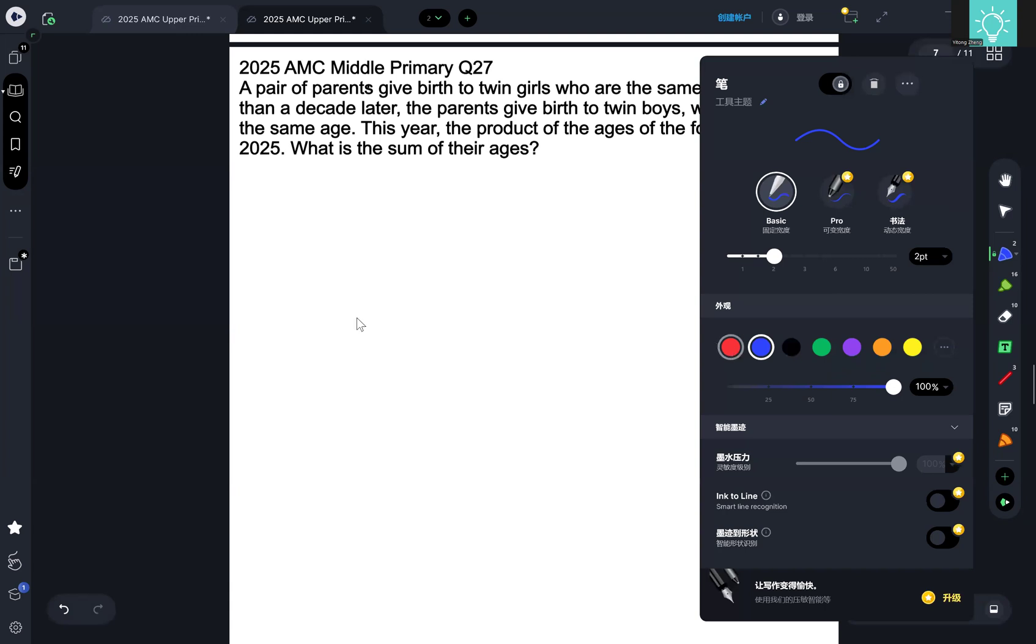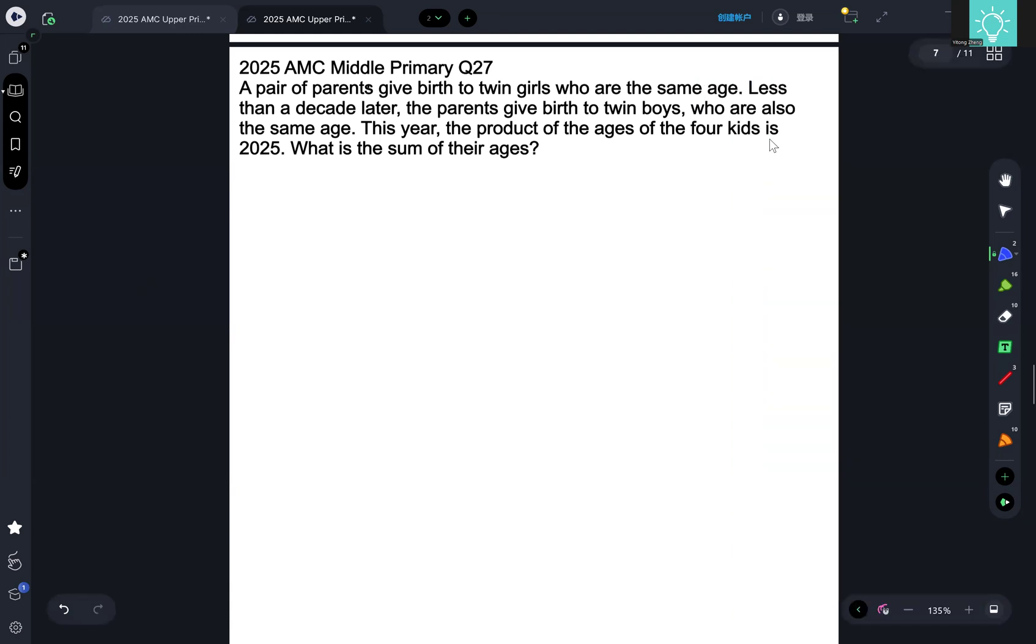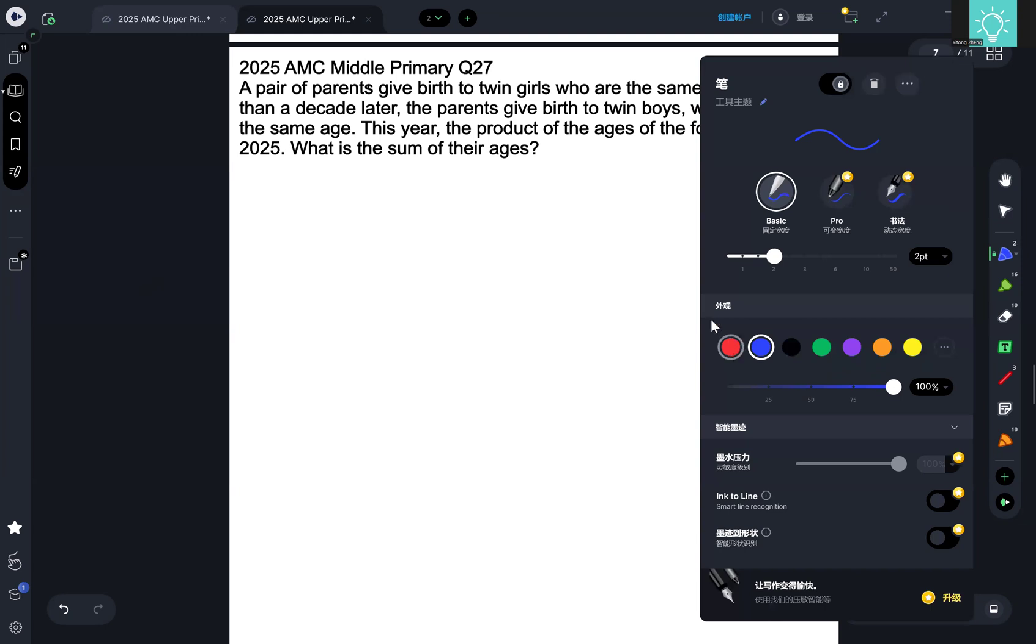A pair of parents gave birth to twin girls who are the same age. Less than a decade later, the parents gave birth to twin boys who are also the same age. This year, the product of the ages of the four kids is 2025. What is the sum of their ages?